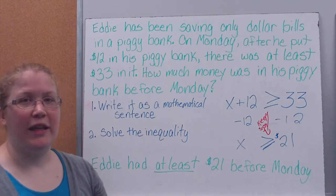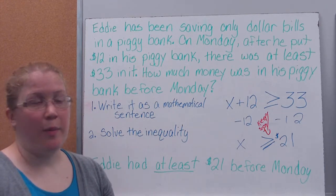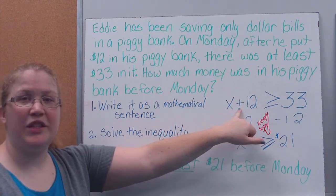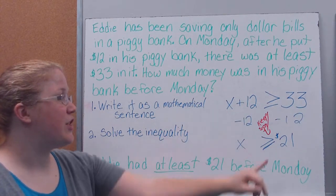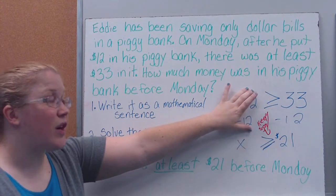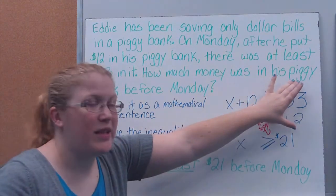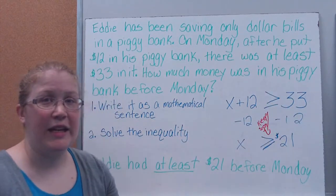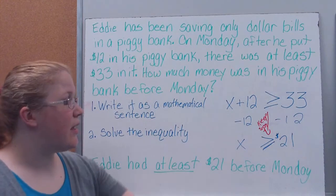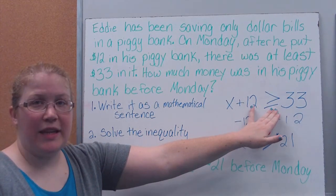Then we're going to solve the inequality. Same way we solved equations. I want to get X by itself. I'm doing addition, so what's the inverse operation? Well, I'm going to undo that by subtracting my 12 out. Since I've done it to this side, I need to do the same thing to this side. I need to keep my equation or my inequality, in this case, balanced.